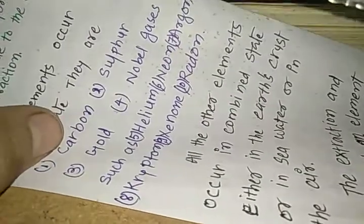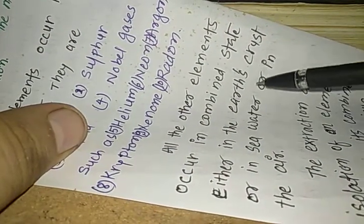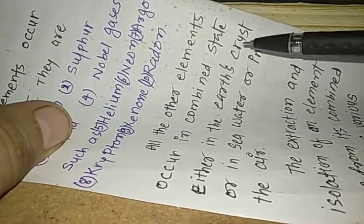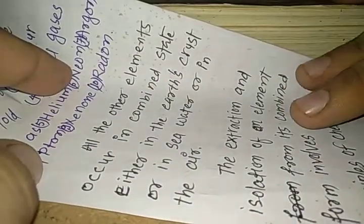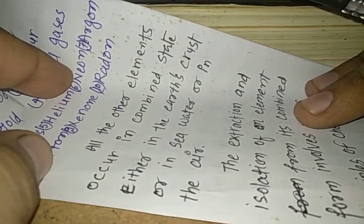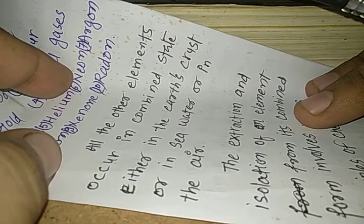All the other elements occur in combined state either in the earth's crust or in sea water or in the air. So, the other elements, whatever we study or whatever we have already known about them into the periodic table, they one or the other way are found into the combined state into the universe.